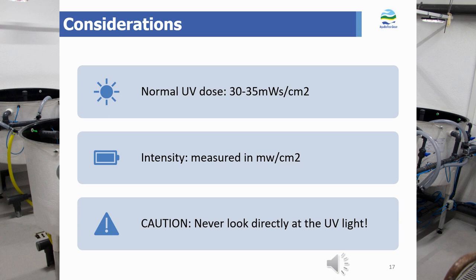One disadvantage of UV lamps is that a single lamp is not really scalable. If you want to increase UV capacity, more lamps must be added to the unit. In large-scale systems, it is not uncommon to see UV units with 38 lamps, which makes maintenance and service more difficult.